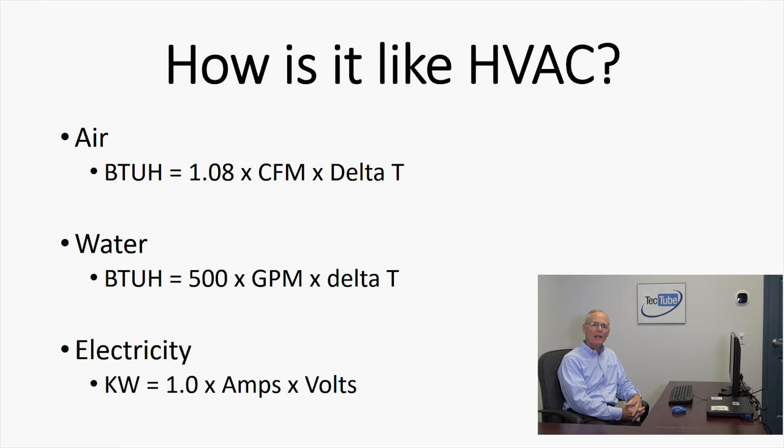How is it like HVAC? Some basic formulas we all use. The first one is air: the BTUH is 1.08 times CFM times delta T. The 1.08 is a constant. For water, it's BTUH times 500 times our gallons per minute times delta T. That gives us the load that's delivered to the space that you need to heat.